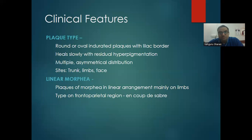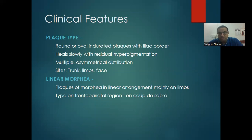Clinical features: plaque type morphea presents as round to oval indurated plaques with a lilac border — the lilac border is classical. They heal slowly with residual hyperpigmentation. Multiple lesions are distributed asymmetrically on limbs, trunk, and face. There are three stages of morphea: erythema stage, edema stage, and atrophic stage.